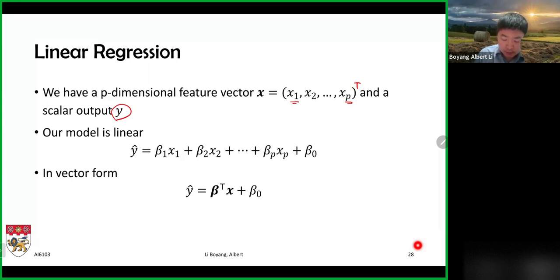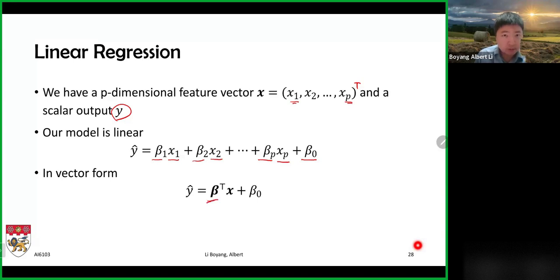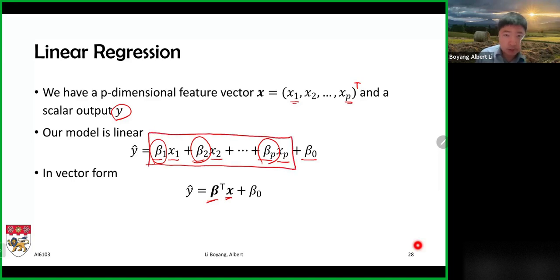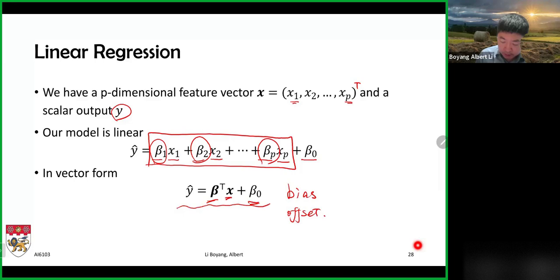The input is x1, x2, all the way to xp, and for each input dimension i have a model parameter beta_1, beta_2, through beta_p. On top of that I also have a parameter beta_0. We can write things in vector form where beta is a column vector containing all values from beta_1 to beta_p, and that has a dot product with the input vector x — giving the first p terms — plus beta_0, which is referred to as the bias or the offset.